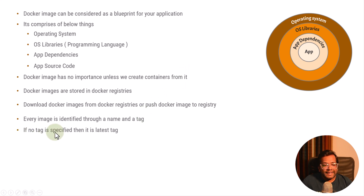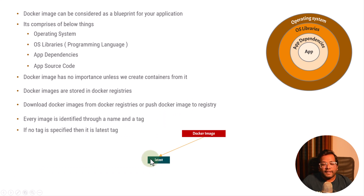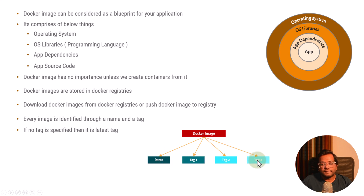If no tag is specified, then it is the latest tag. When you download an image, you always specify the image name and the tag. If no tag is specified, the latest tag will be used and the latest image will be downloaded. So a Docker image can have a latest tag, or tag one, two, three — these are the different versions of the same Docker image. One Docker image can have multiple versions and they are identified using tags.